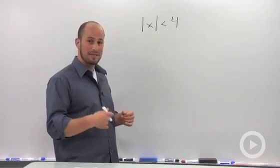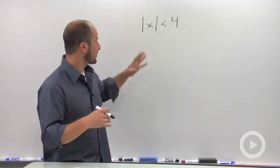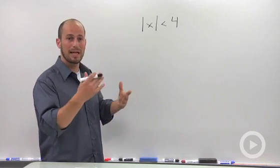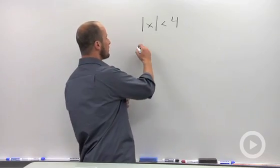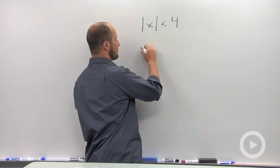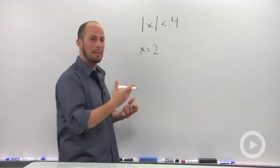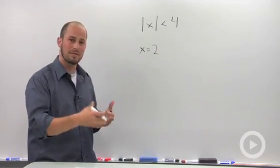Just using some logic let's actually think of some numbers where this works. If we think of a positive number anything less than 4, say x is equal to 2, absolute value of 2 is less than 4, that would work.